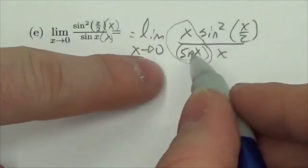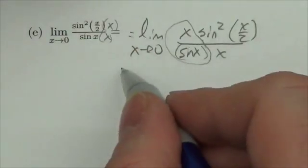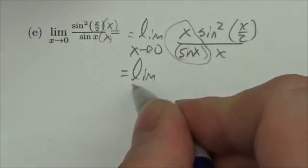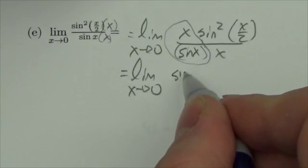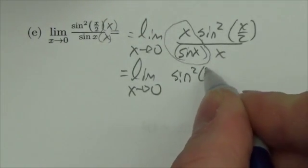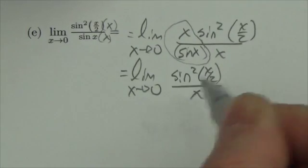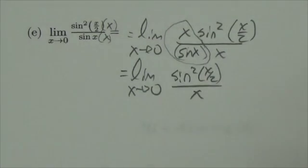So this is going to leave me with the limit as x approaches zero of sine squared of x over 2, all over x.